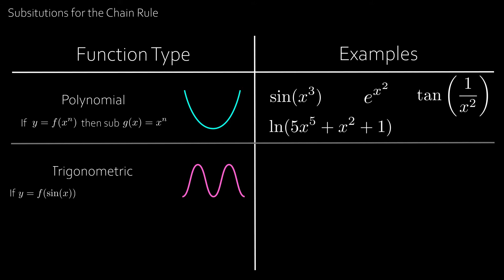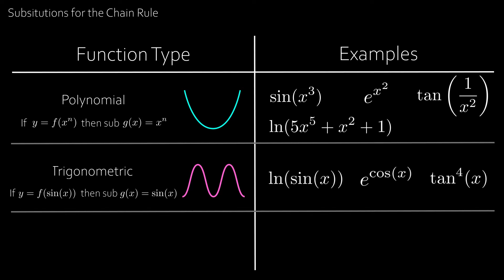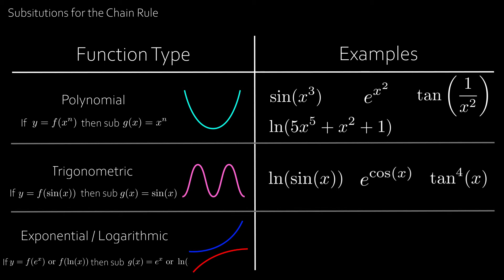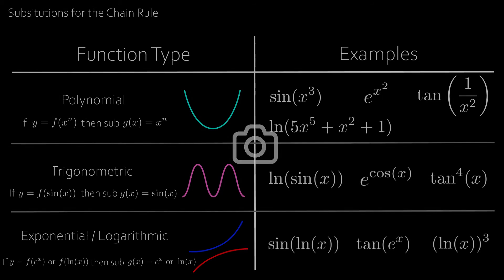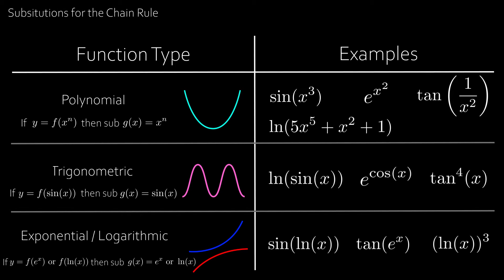The next function type is trigonometric: if y equals f of sin x or cosine of tan x, sub in g equals sin x, cosine x, or tan x. For example, ln of sin x — sub in g equals sin x; e to the cosine x — sub in g equals cosine x; tangent of x all to the power of 4 — sub in g equals tan x. Finally, exponential or logarithmic: if y equals f of e to the x or f of ln x, sub in g equals e to the x or ln x. For example, sine of ln x — sub in g equals ln x; tan e to the x — sub in g equals e to the x; ln x all cubed — sub in g equals ln x. Screenshot this table as it can help you immensely with chain rule questions.